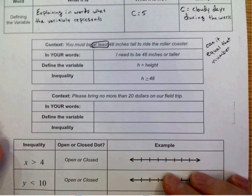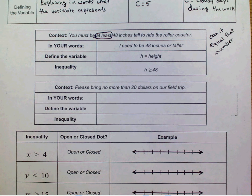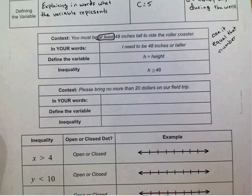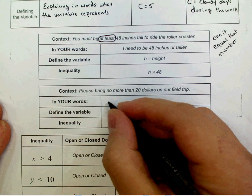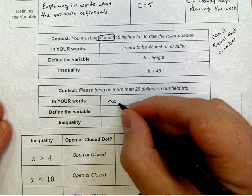So when we talk about please bring no more than $20 on our field trip, underline, circle important words, see if you can define what your variable is, tell me what inequality sign that you're going to use, and go from there. In our words, no more money than $20.